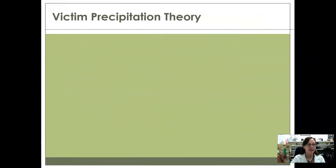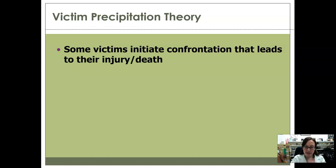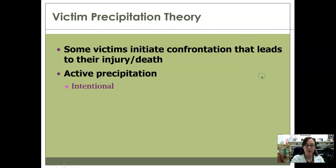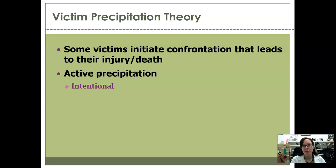Victim precipitation theory is basically the idea that some victims initiate whatever the incident was that actually leads to their victimization — they do something to lead to what ends up being their victimization. This can happen in one of two ways. The first is active precipitation, where there is some intentional behavior on the part of the to-be-victim — they might act provocatively, be belligerent, threaten somebody, or even be the one who attacks first and just come out on the losing end.